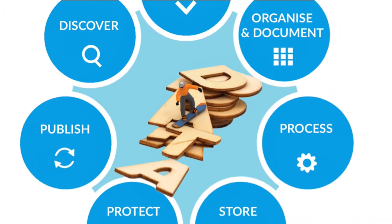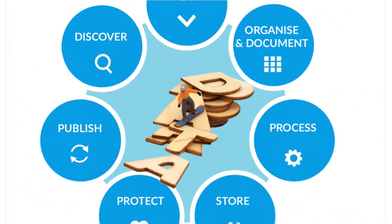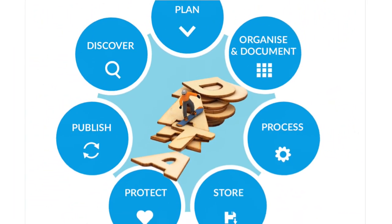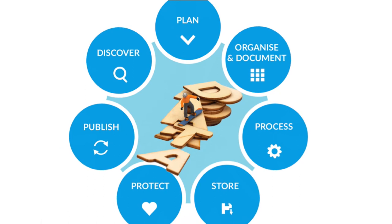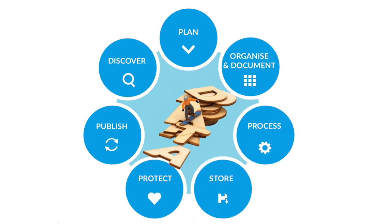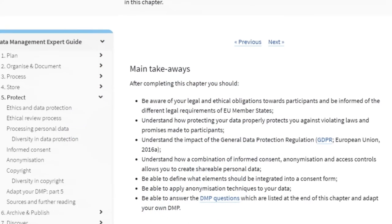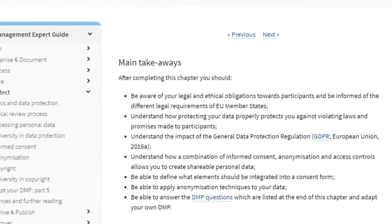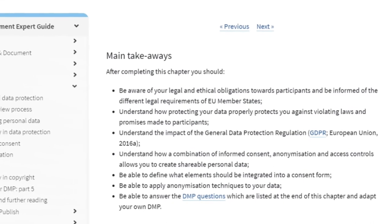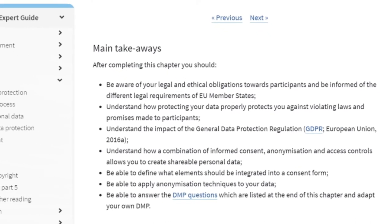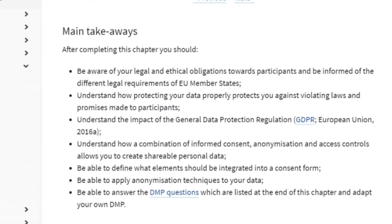The Data Management Expert Guide is structured along the research data lifecycle and has seven chapters. You will find a checklist for making your own data management plan, for making your data FAIR, and much more. At the end of every chapter, there are expert tips on how to develop and improve your data management plan.